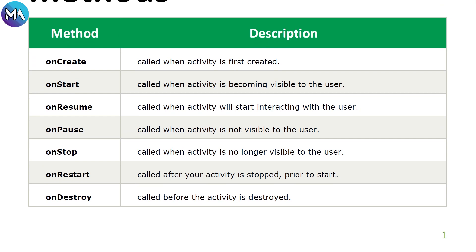The third method is onResume — it is called when the activity will start interacting with the user. So: the user launches the activity, onCreate is called; the app becomes visible, onStart is called; and onResume is called when the activity is ready to interact with the user. onPause is called when the activity is not visible to the user.